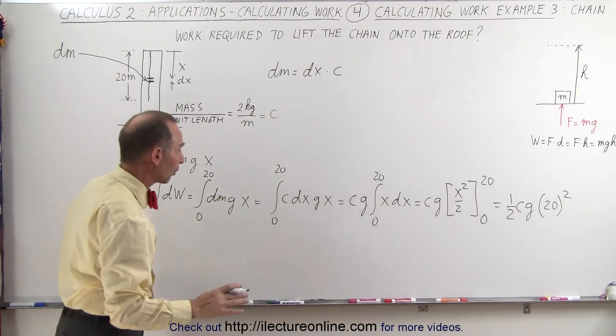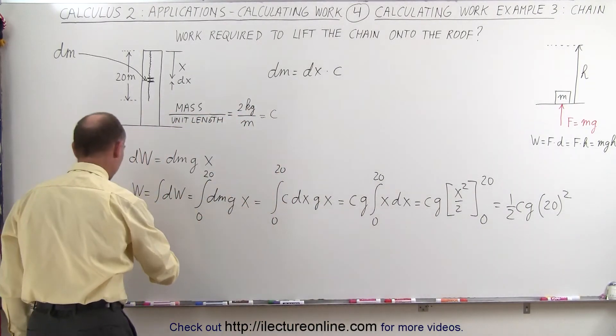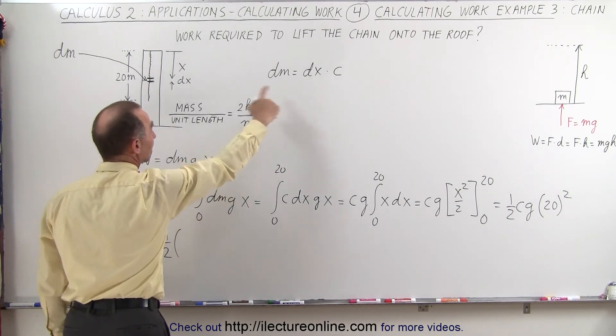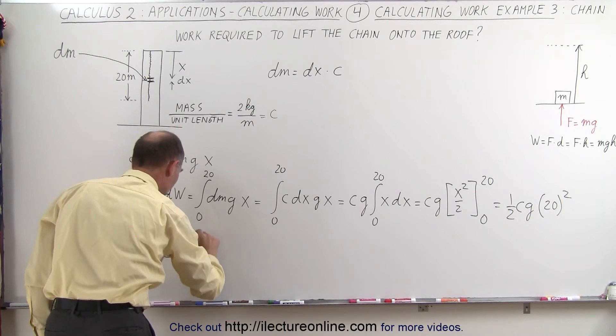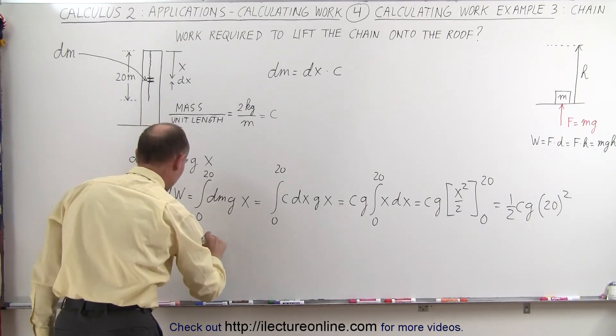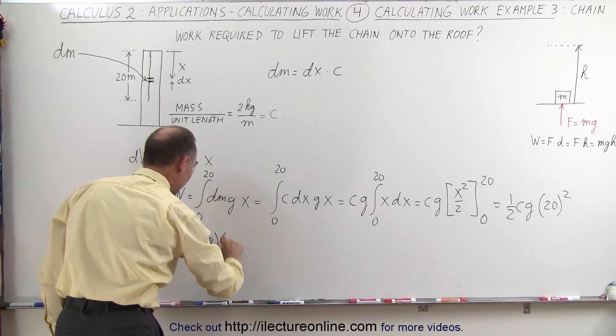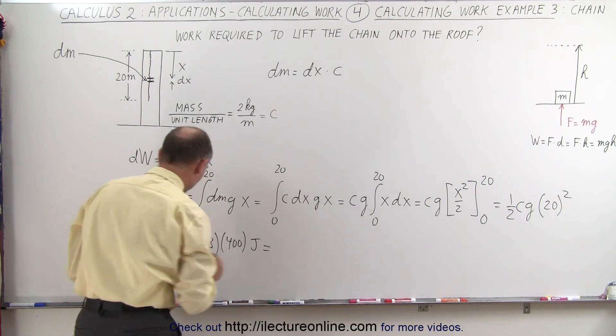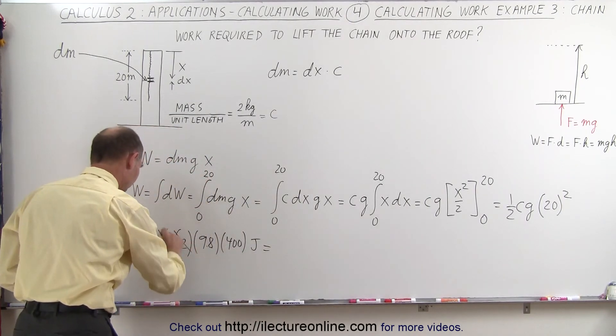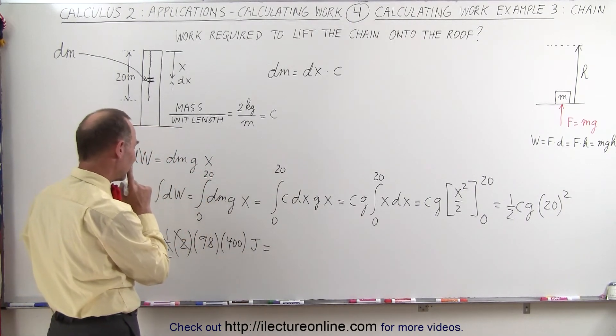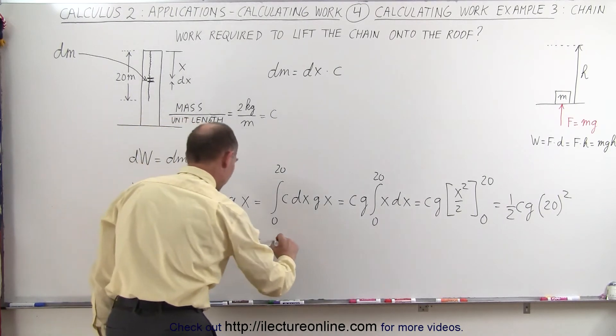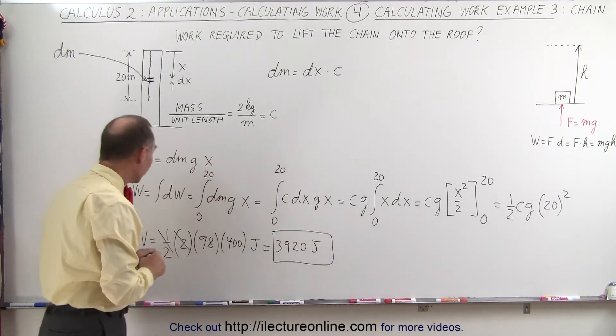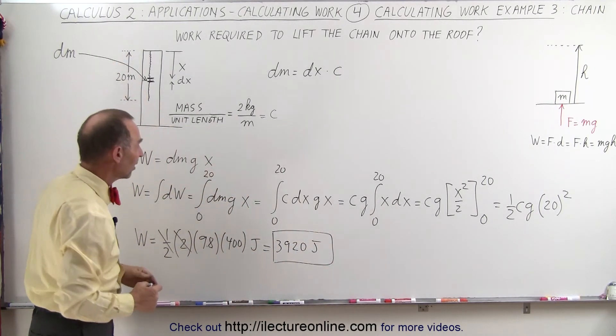So now to calculate the total work done, we plug in what all those are. Work done is equal to one half times c. C here is 2 kilograms per meter so we'll put down 2. g is 9.8 and 20 squared which is 400. Of course that will be in terms of joules, and the 2 cancels out with one half. 9.8 times 400, that would be 3920. And so that is the total amount of work done to take this chain and lift it on top of the roof.